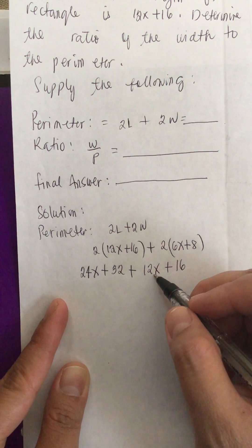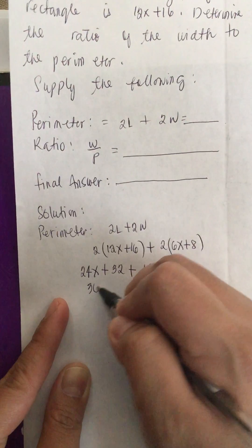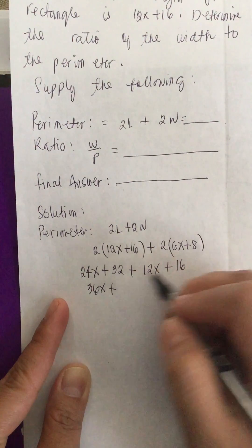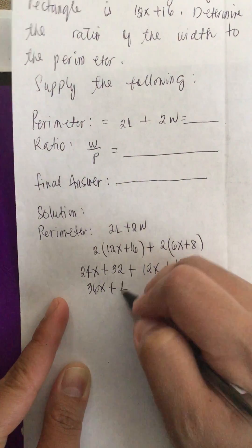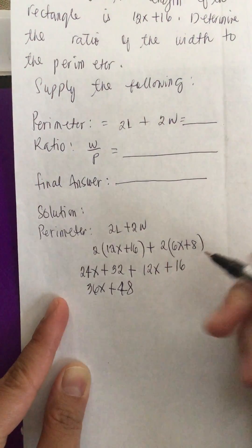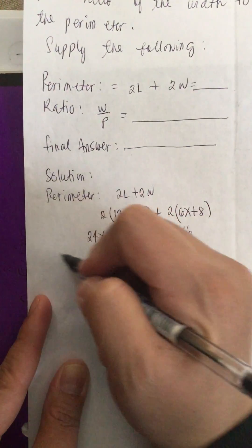Combining like terms: 24x plus 12x is 36x, and 32 plus 16 is 48. So the perimeter is 36x plus 48.